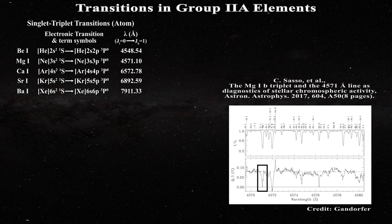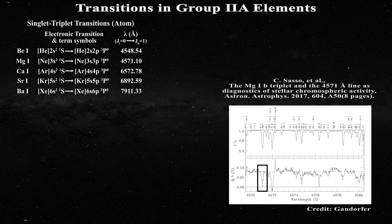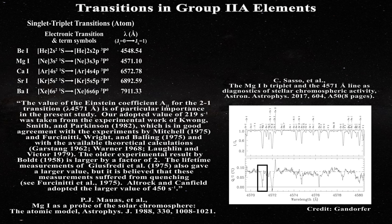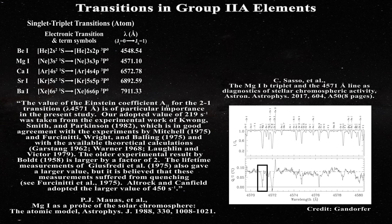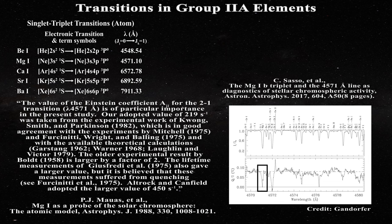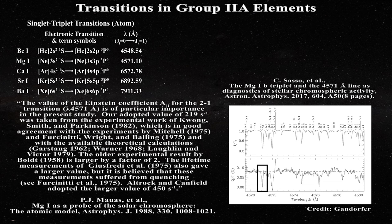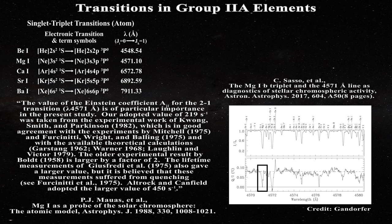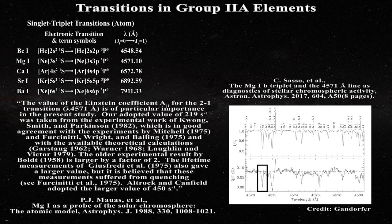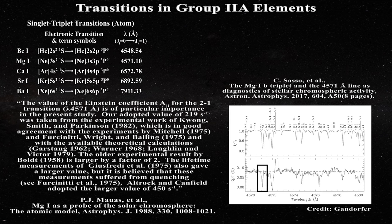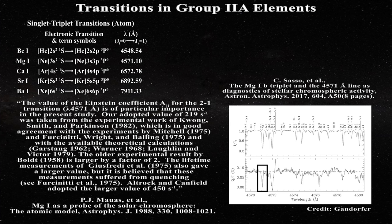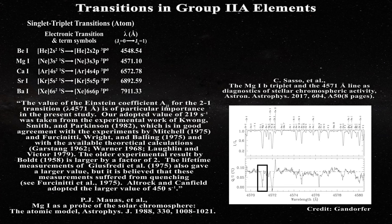The question of Einstein coefficients introduced above can now be re-examined using this magnesium line at 4571 angstroms in order to ascertain how much variability exists in measuring this value in the laboratory. Here is a quote relative to the Einstein coefficient associated with the magnesium 1 4571 angstrom line. The value of the Einstein coefficient AJI for the 2.1 transition lambda 4571 angstroms is of particular importance in the present study. Our adopted value of 219 per second was taken from experimental work by Kwong, Smith and Parkinson which is in good agreement with the experiments by Mitchell, Fersiniti, Wright and Bolling and with the available theoretical calculations Garstang, Warner, Lolling and Victor. The older experimental result by Bolt is larger by a factor of two. The lifetime measurements of Gersfitti et al. also gave a larger value but it is believed that these measurements suffered from quenching.